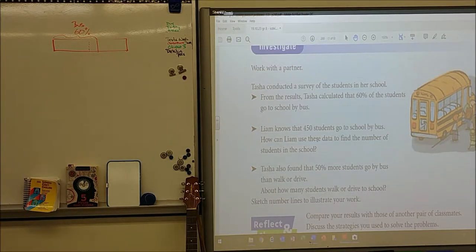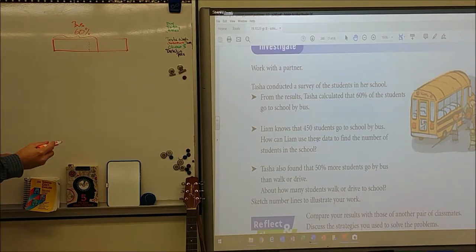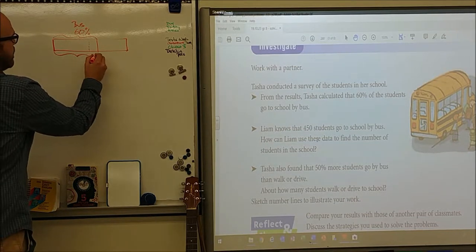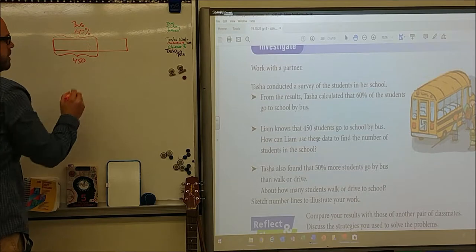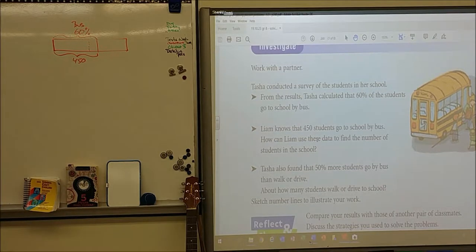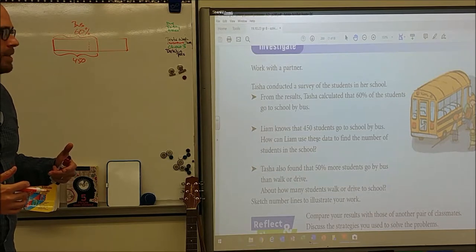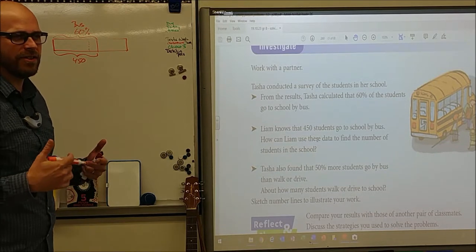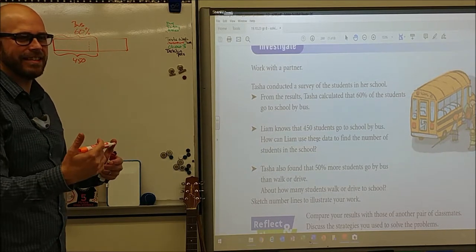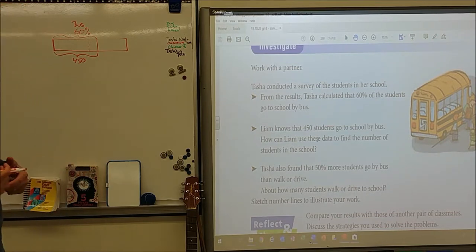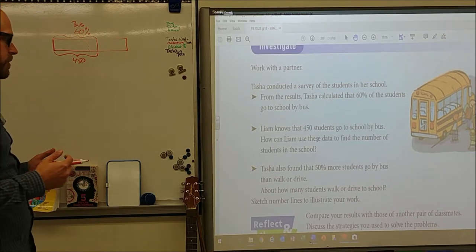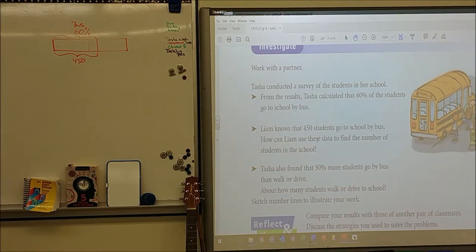Liam knows that 450 students go to the school by bus. Well, and that means 60% is 450 students. How can Liam use these data? Okay, that sounds awkward. Don't we think it should be this data? I guess it's these because it's more than one. To find the number of students in the school.